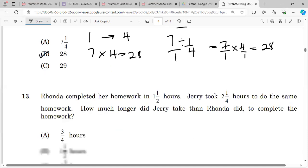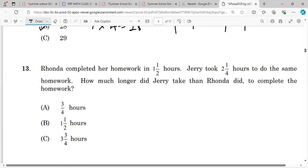Randa completed homework in 1 and 1/2 hours. Jerry took 2 and 1/4 hours to do the same homework. How much longer did Jerry take than Randa to complete the homework? So one takes 1 and 1/2 hours. You can convert to minutes if you want. But what you can see is we need half an hour more to make 2, then you need another quarter hour, so that's 3/4 of an hour.